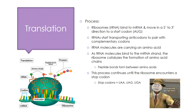The ribosome only has to find one of those stop codons to stop translation. You will need to know these three stop codons: UAG, UAA, and UGA.